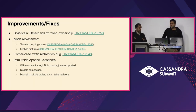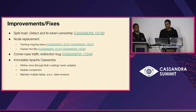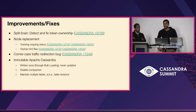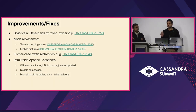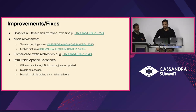We also discovered a corner case traffic redirection bug when upgrading from Cassandra version 3.0.14 to 3.0.27. This is still under discussion with the community. If you are planning to upgrade from 3.0.14 to 3.0.27, check out CASSANDRA-17248.